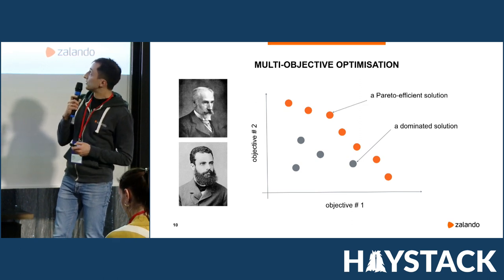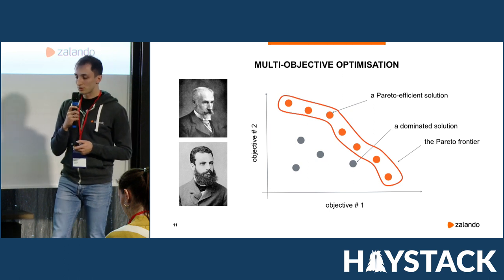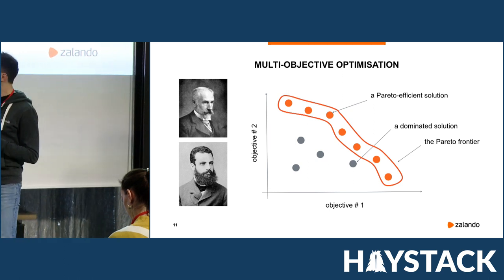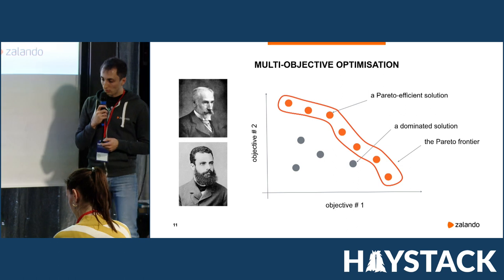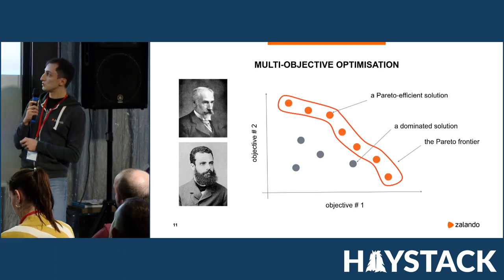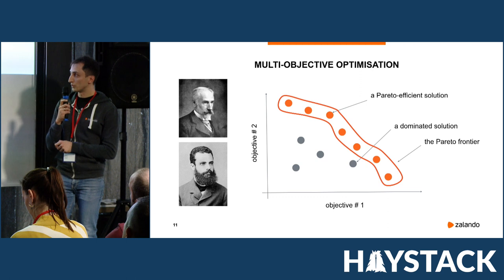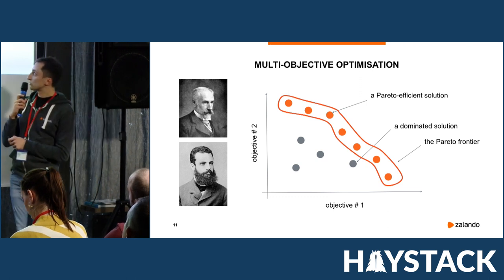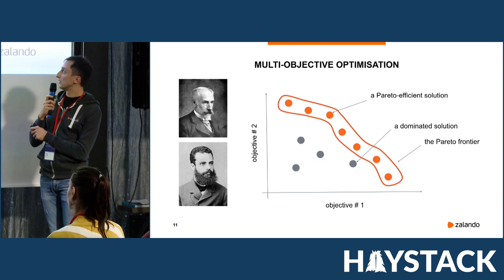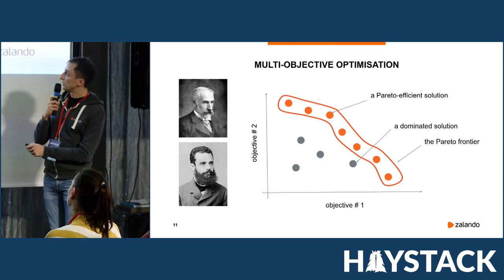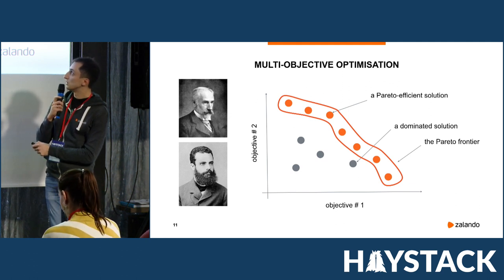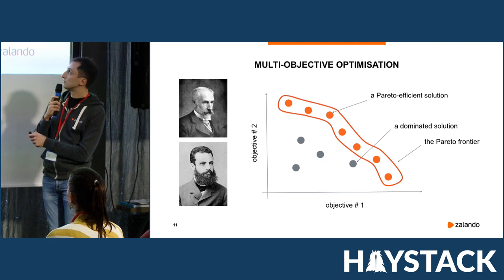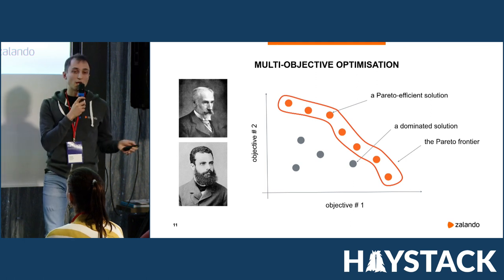The set of all Pareto-optimal solutions is called the Pareto front or Pareto frontier. When we optimize for one of the two objectives alone — say objective 1 — it is natural to expect we end up near this orange dot, but the value of objective T corresponding to that dot can be too low. Instead, we may want to be somewhere in the middle of this Pareto frontier. The question is, of course, how do we get there?